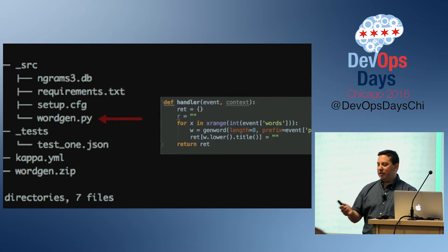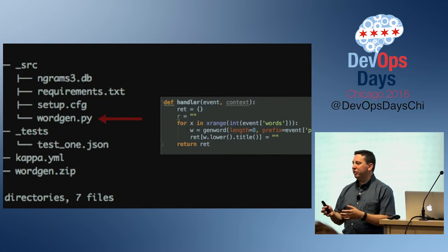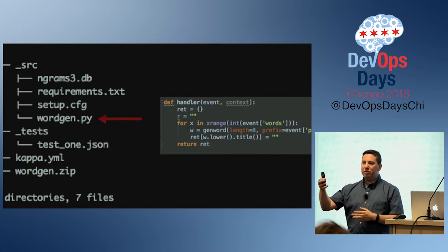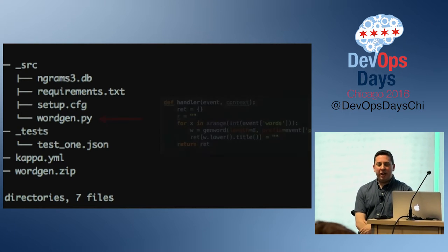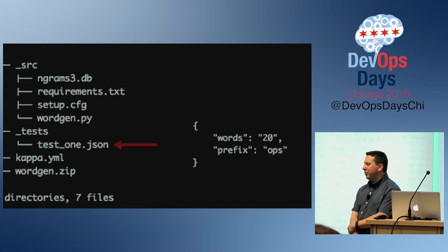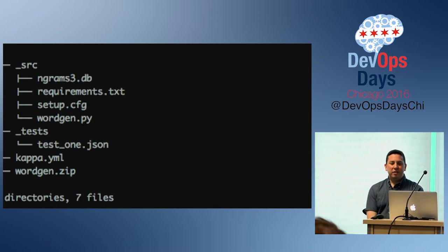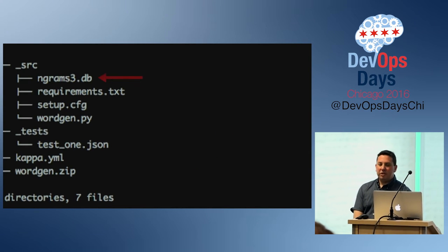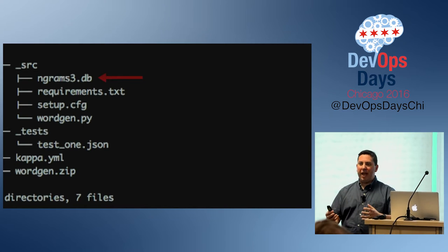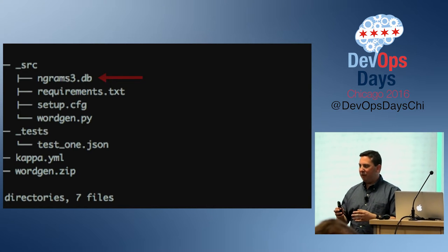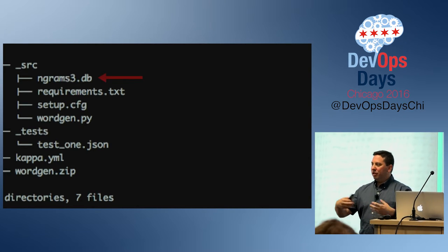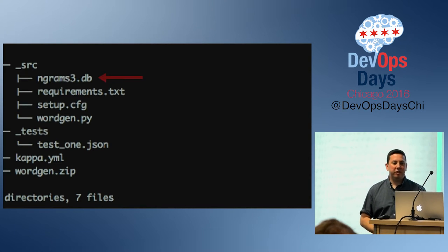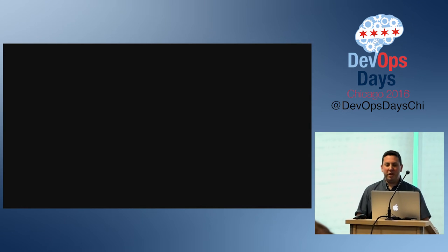WordGen itself is very simple — it basically just calls another function that says go grab the data and pull it out. There's a test file that's just JSON with some arguments. The database file is actually a SQLite database that gets uploaded with the function every time it deploys. This will be relevant in just a minute.